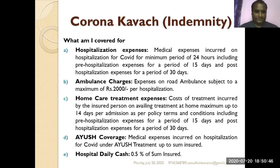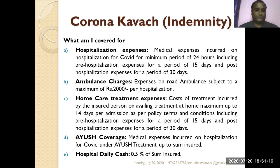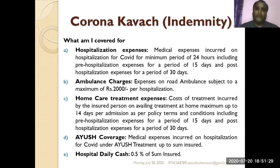If the ambulance is used, you get a maximum of 2,000 rupees per hospitalization as ambulance cover — if the actual cost is 400 rupees, 400 will be given; if it is 4,000, only 2,000 will be given. It also covers home care treatment — the cost of treatment incurred by the insured at home for a maximum of 14 days per admissible admission, including pre-hospitalization of 15 days and post-hospitalization of 30 days. It also covers AYUSH treatment.